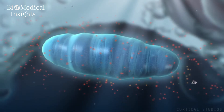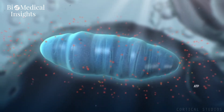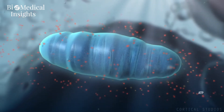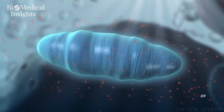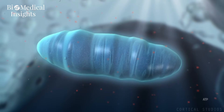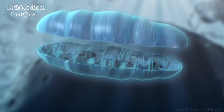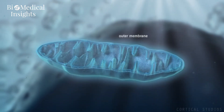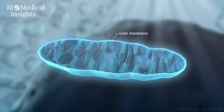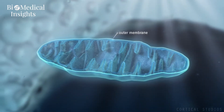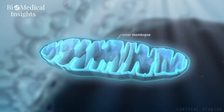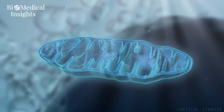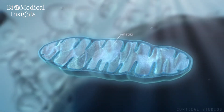ATP is released by the mitochondria so cells can use it. Mitochondria consist of two membranes: an outer membrane separating it from the cytosol, and an inner membrane surrounding the so-called matrix.